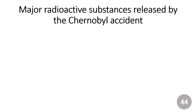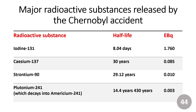The radioactive substances released from the Chernobyl accident include iodine-131, cesium-137, strontium-90, and plutonium-241.